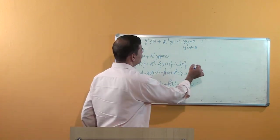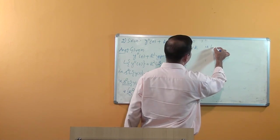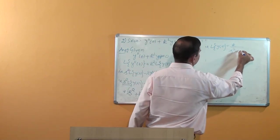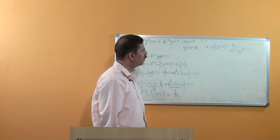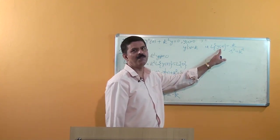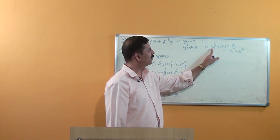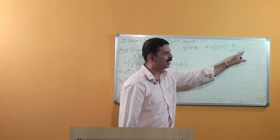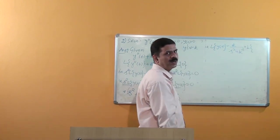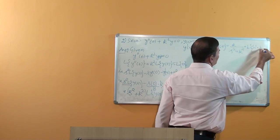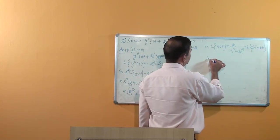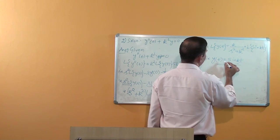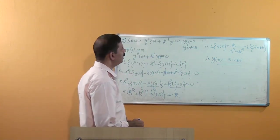Therefore, L{y(t)} = k / (s² + k²). Recalling the formula, Laplace of sin(kt) = k/(s² + k²), so we can write equivalently L{y(t)} = L{sin(kt)}. Thus y(t) = sin(kt) is the solution for the given IVP.